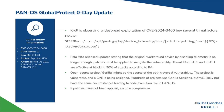Palo Alto subsequently released a new threat ID to prevent against some of these attacks — threat IDs 95189 and 95191. According to Palo Alto, they are effective at blocking 90% of the attacks. These threat IDs look for both the path traversal and the improper sanitization and the commands included in the file name. However, the best thing to do is to patch.